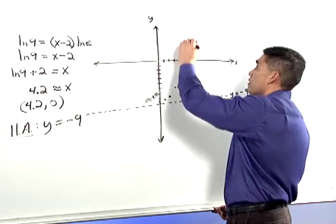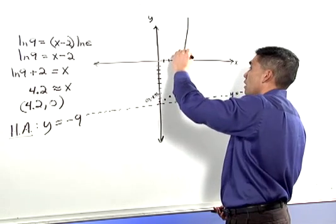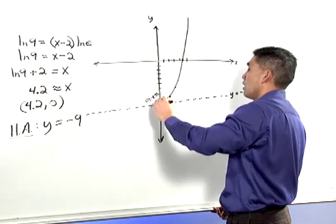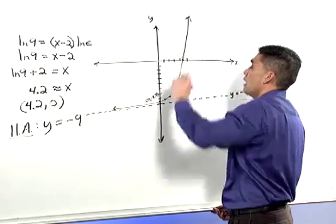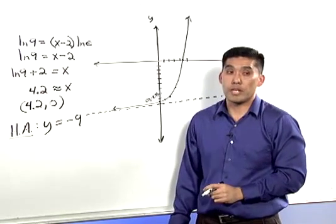And let's connect these dots. And here's the curve of our exponential function. The last thing we need to do is to state the domain and range of the function.